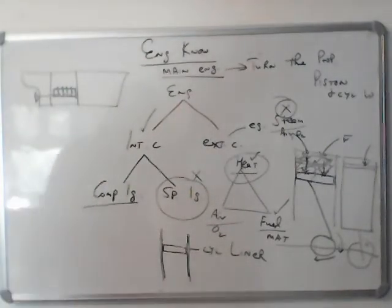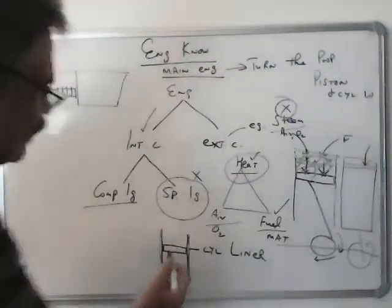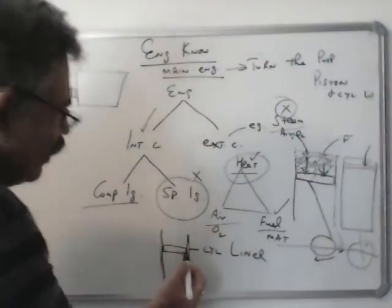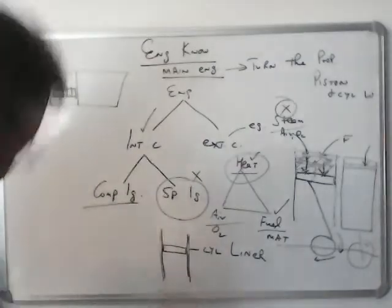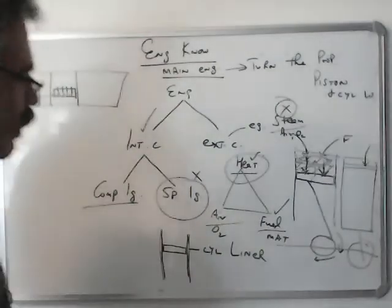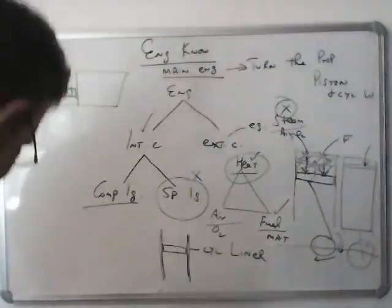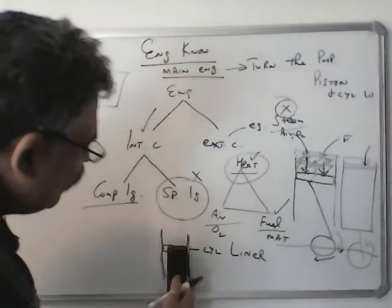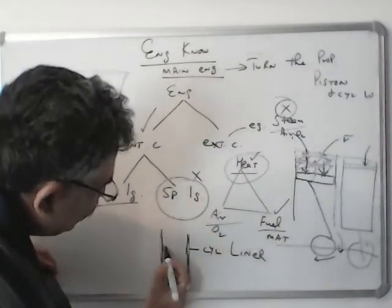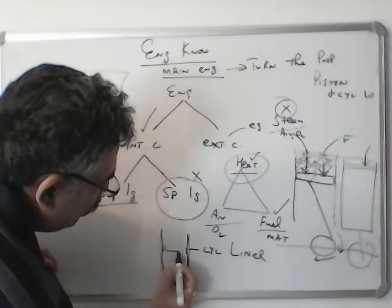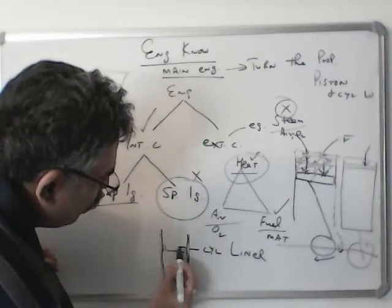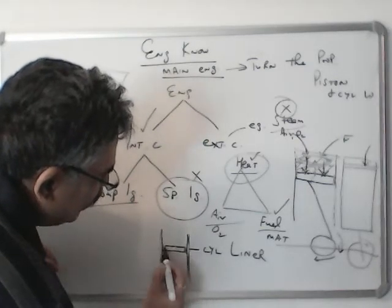Now liner is also expensive to change. So what we do is, instead of the piston touching the liner, we have piston rings. So this piston does not touch the liner, there is a small gap, and here we have the piston rings.